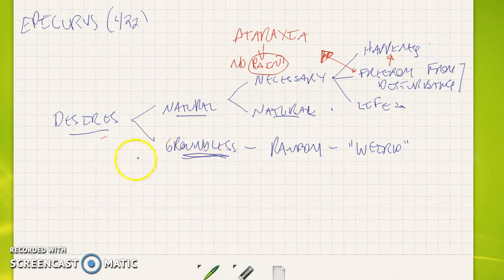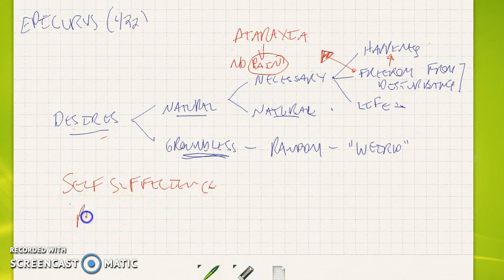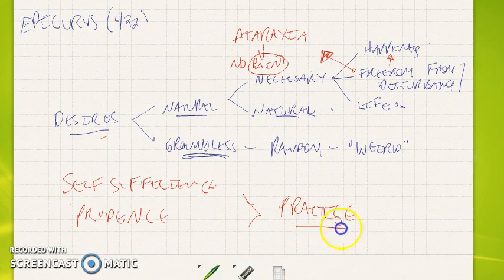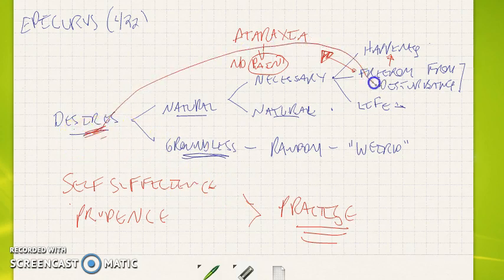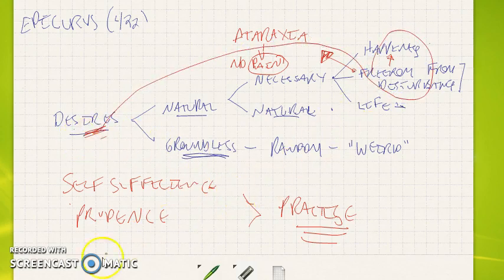And then he gives us a couple other, throughout the reading, a couple more things to consider. He talks about self-sufficiency as important for happiness, and also of prudence, which is wisdom. But lastly, he says, on the very last page, ending the thing, Practice these and the related concepts day and night. So in other words, you need to practice, practice, practice, in order for the stuff to become a habit. So that we can make our desires ultimately about freedom from disturbance and happiness. But it takes time and effort.